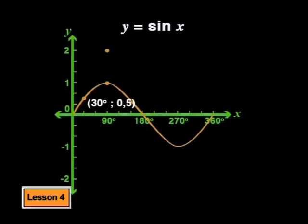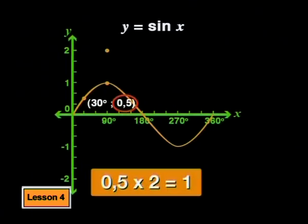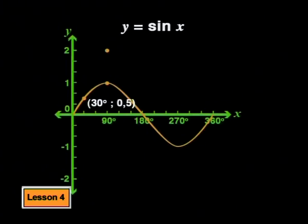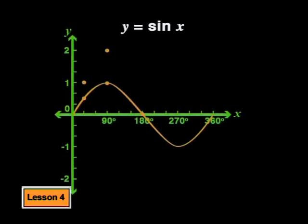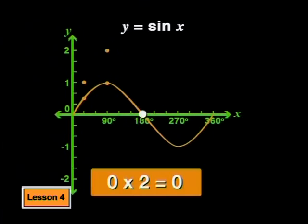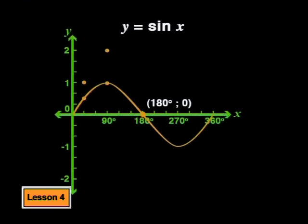Looking at another point on the parent graph: where x is 30 degrees and y is 0.5, if we double that y value, we get 0.5 times 2, which is 1. So we plot that point. It is also twice as far from the x-axis as the point on the parent graph. At points on the x-axis where the y value is 0, all points are multiplied by 2, but 2 times 0 is still 0, so we plot the point at (180, 0).